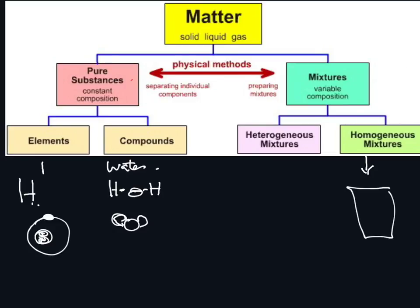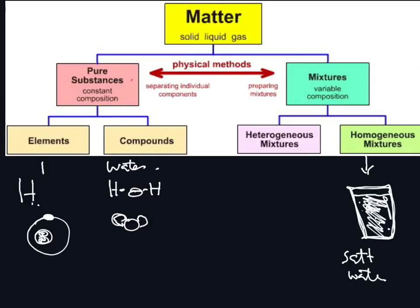For example, if you take salt and water — like when you're making tea with sugar and water, or coffee — coffee is a homogeneous mixture because you put the sugar in and you can't see it anymore. It makes one complete solution. However, the sugar and water are not chemically bonded; the sugar is in there but you just can't see it — it's mixed completely.